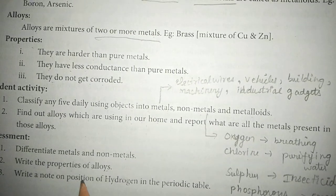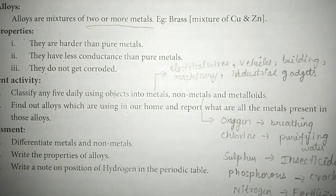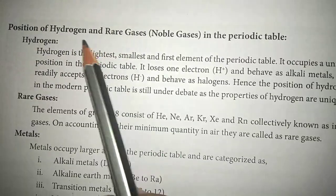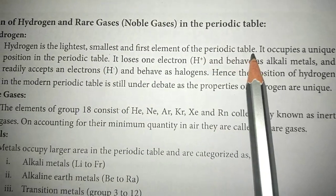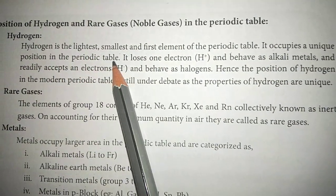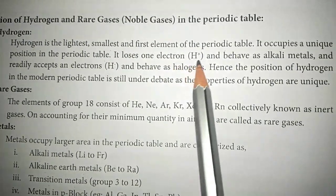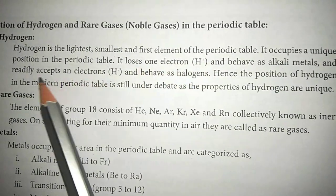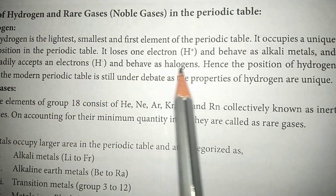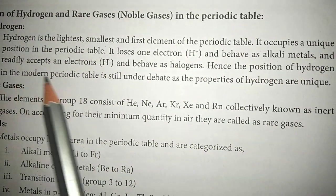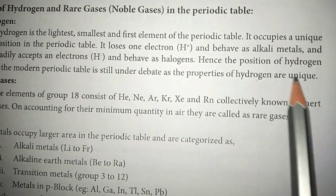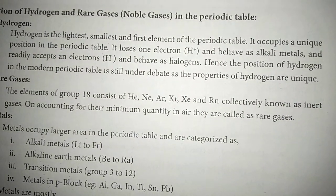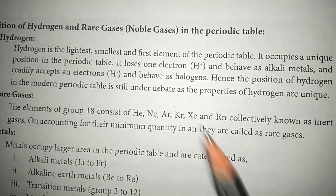Next question: write a short note on the position of hydrogen in the periodic table. Hydrogen is the lightest, smallest, and first element of the periodic table. It occupies a unique position — it loses one electron and behaves like an alkali metal, and it readily accepts an electron and behaves like a halogen. Hence, the position of hydrogen in the modern periodic table is still under debate, as the properties of hydrogen are unique.